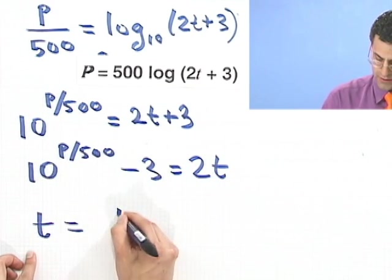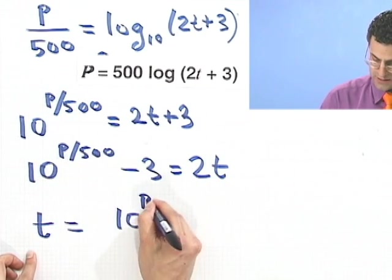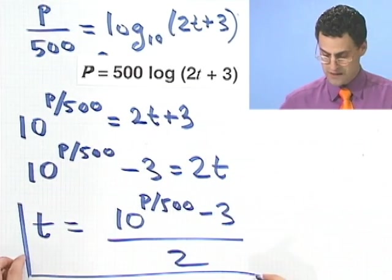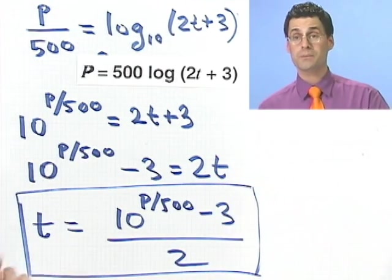So what does t equal? I just divide by 2. So 10 to the P over 500 minus 3, all divided by 2. So there's the answer. I've solved for t in terms of P.